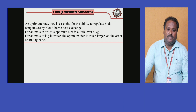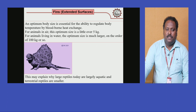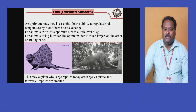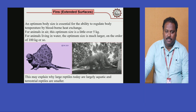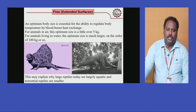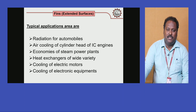For animals in air, the optimum size is a little over 5 kg. For animals living in water, the optimum size is much larger — on the order of 100 kg. This may explain why large reptiles today are largely aquatic, while terrestrial reptiles are smaller. Both pictures shown have fins for heat transfer; the second picture resembles a dinosaur from a previous generation. These are all external surfaces used for the purpose of heat transfer.